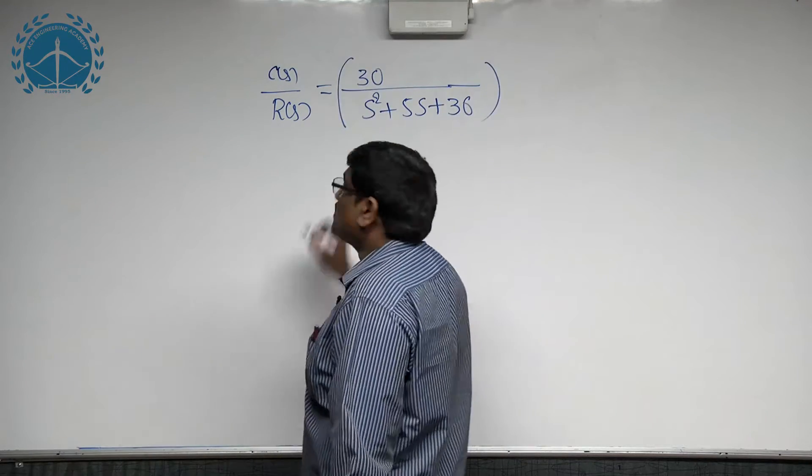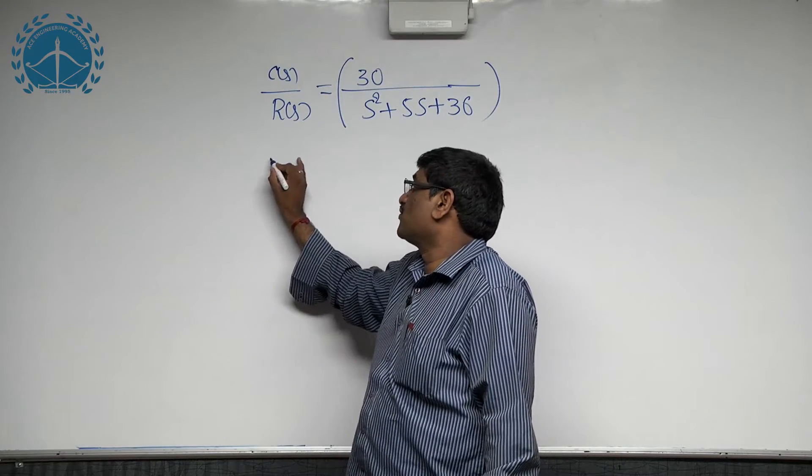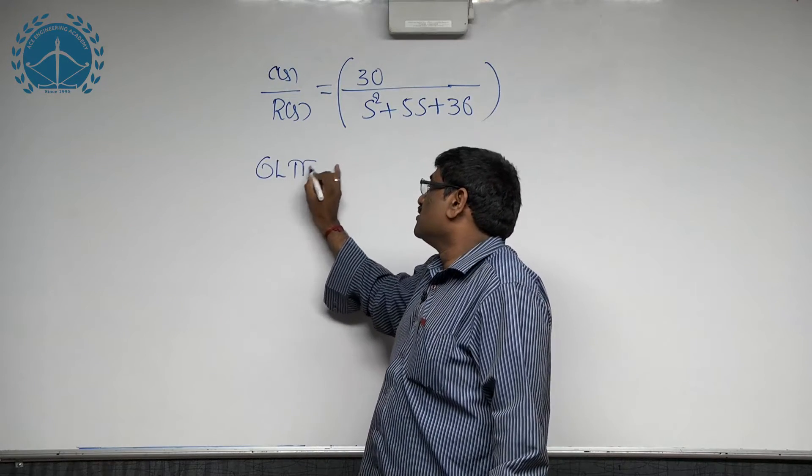To get the steady state error, we require the open loop transfer function, that is G(s).